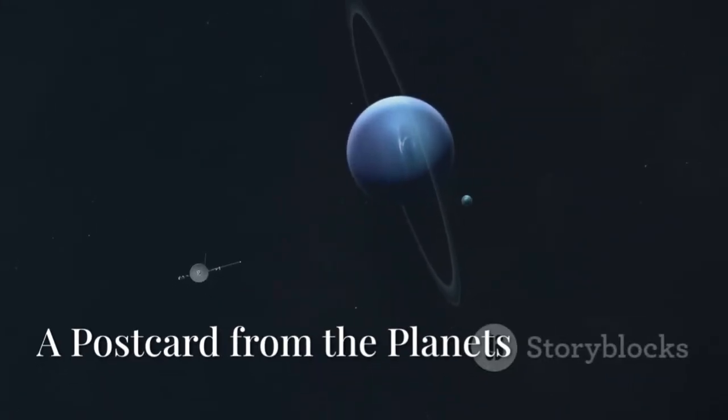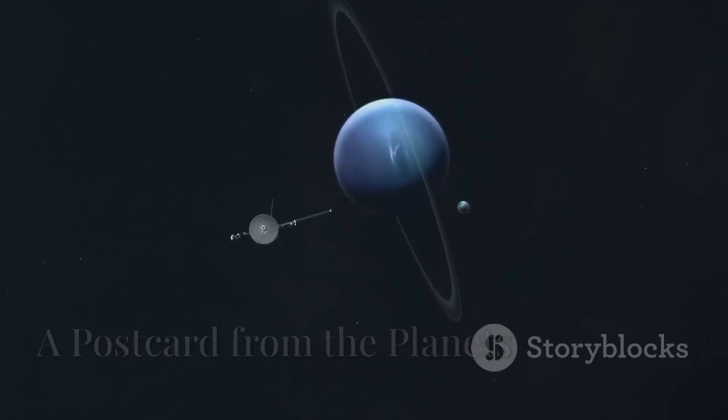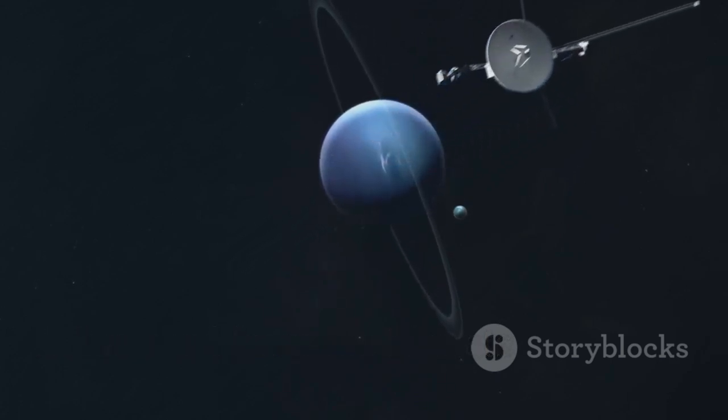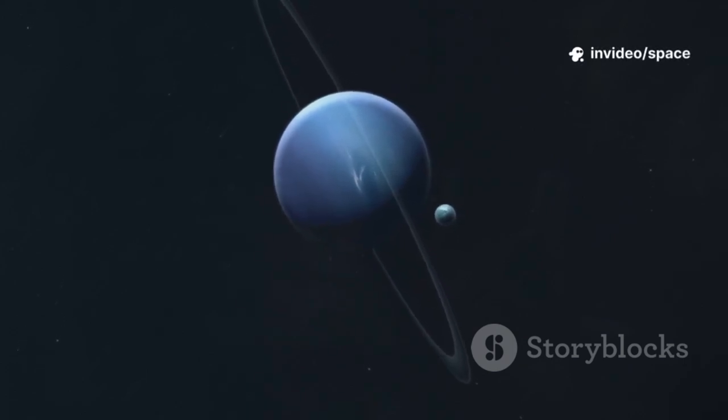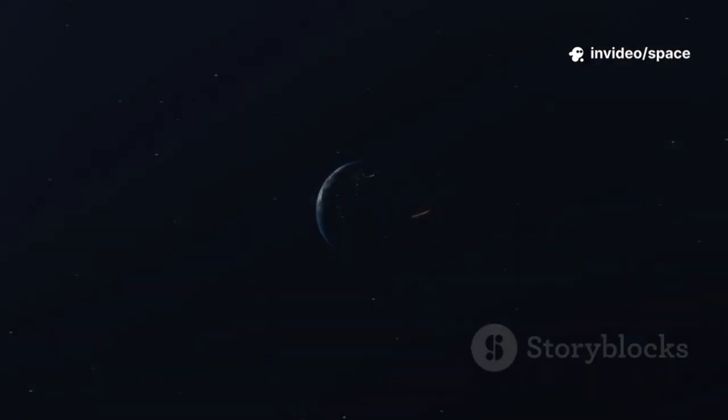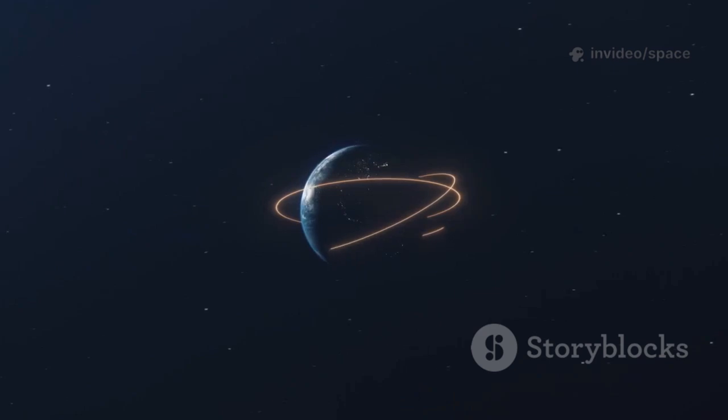Voyager's adventure started with a cosmic opportunity, a rare planetary lineup that happens just once every 176 years, letting us slingshot past the outer giants using their gravity. NASA sent Voyager 1 and 2 on a bold mission.